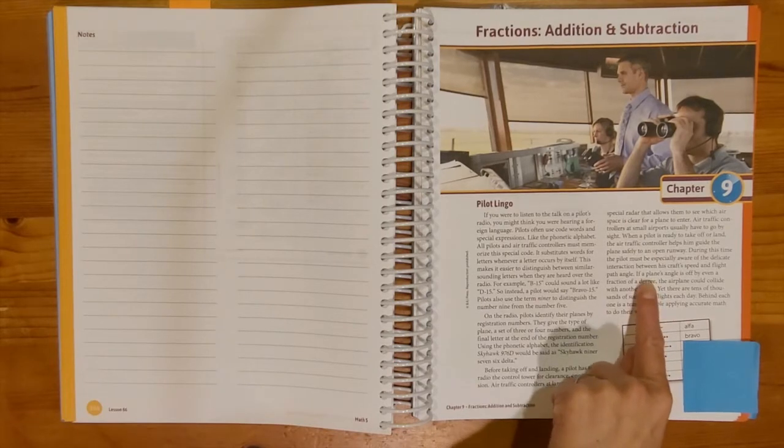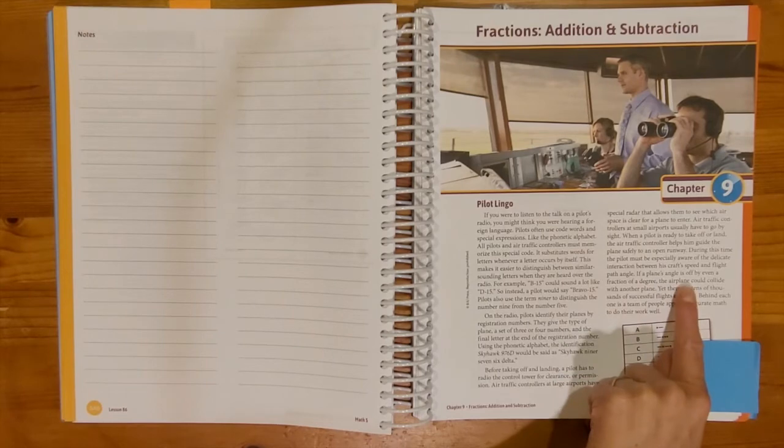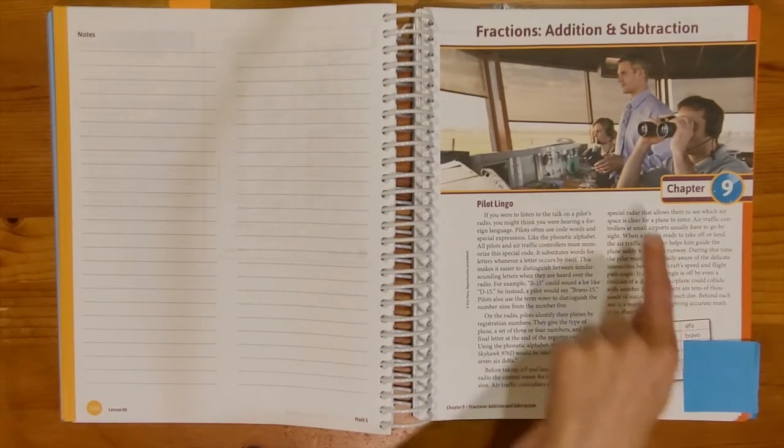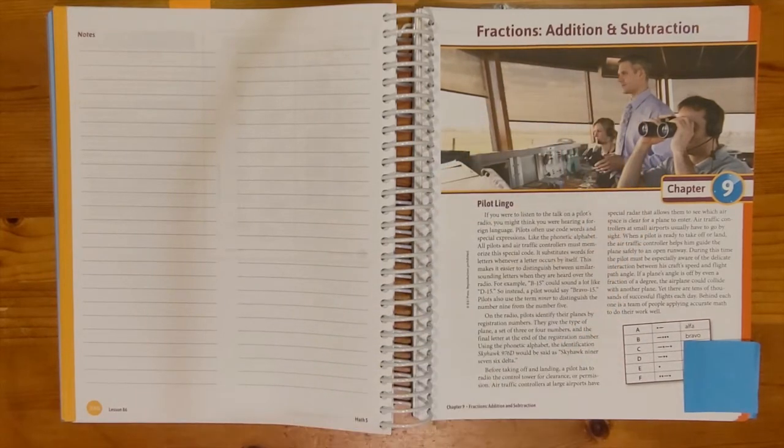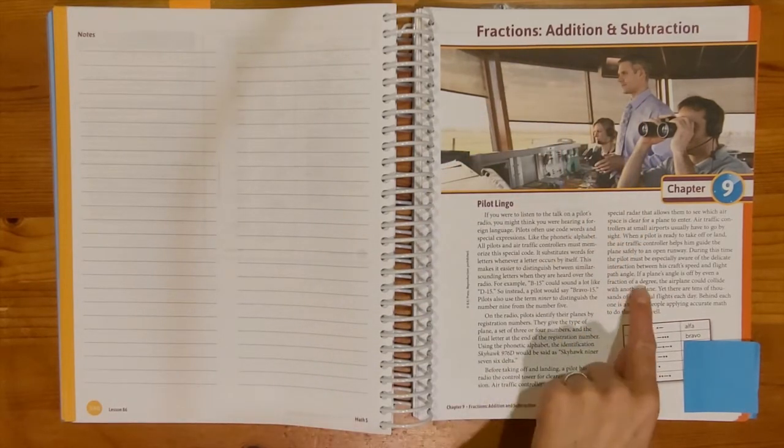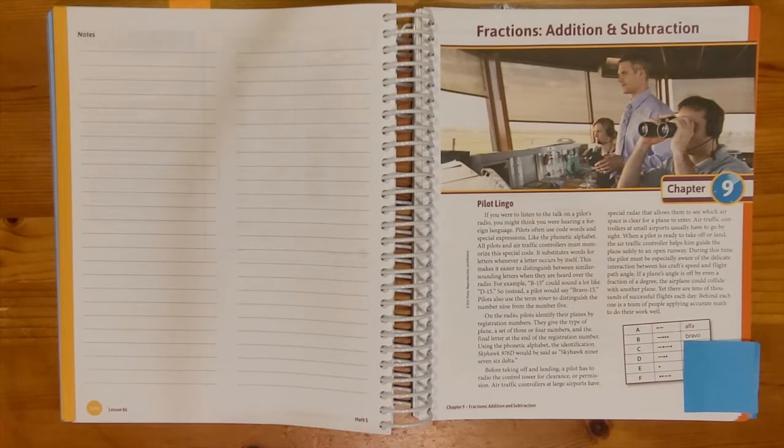This sentence right here is our hook in chapter 9. If a plane's angle is off by even a fraction of a degree, the airplane could collide with another plane. This chapter is about adding and subtracting fractions. So here is a real world experience with fractions and why they could be important.